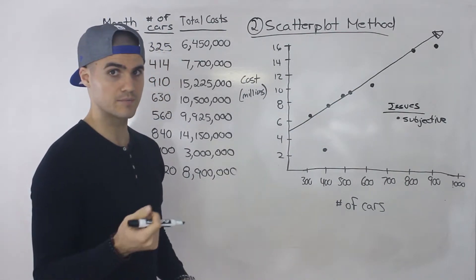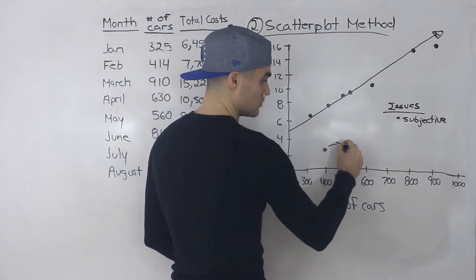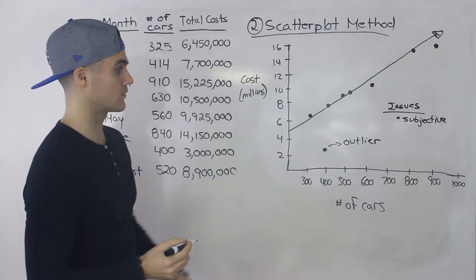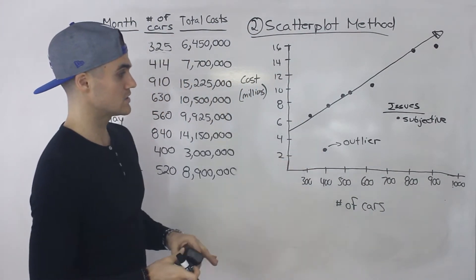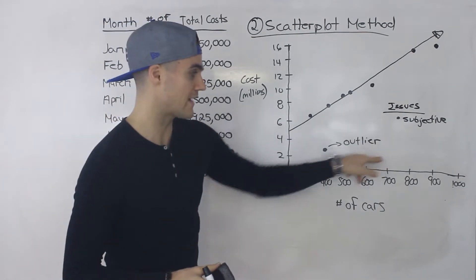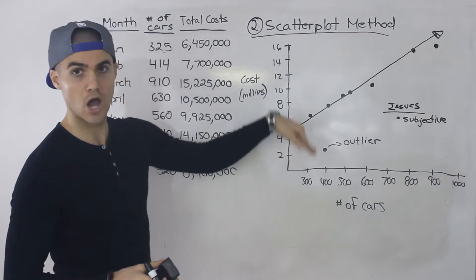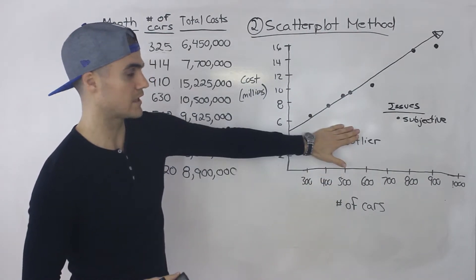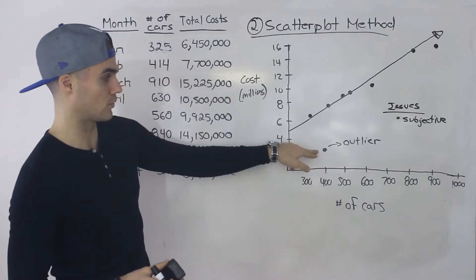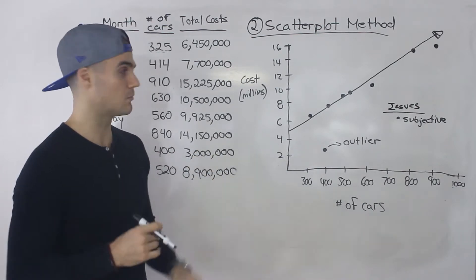But the advantages to it is that it's quick. The other advantage is that you can see outliers visually. Right notice that this is an outlier so we can maybe ignore that outlier. We'd have to get an explanation of why that happened. And if the reason that that happened is not going to continue in the future then we can maybe ignore that outlier. And I'm going to show you in the next method how ignoring an outlier makes your equation more accurate.